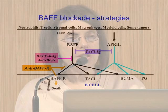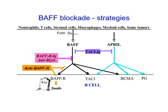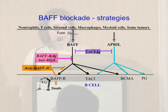So how do we go about blocking BAF? There are two major strategies. The first is to use a reagent that blocks the interaction of BAF with its receptors. You can do this either with a fusion protein of the BAF receptor with immunoglobulin, or with an antibody directed at BAF itself. When you do this, you block the interaction of BAF with its receptors, but APRIL is left to interact with TACI and BCMA.